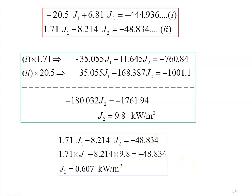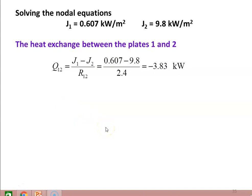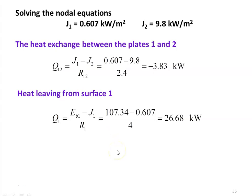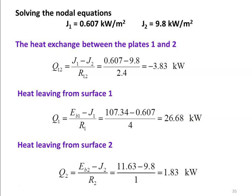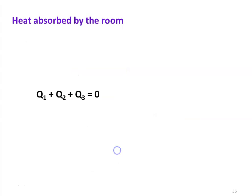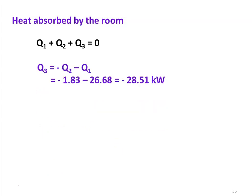Now calculating the heat transfer: Q12 equals (J1 minus J2) divided by R12 equals (0.607 minus 9.8) divided by 2.4 equals minus 3.83 kilowatts. Heat leaving surface 1: Q1 equals (Eb1 minus J1) divided by R1 equals (107.34 minus 0.607) divided by 4 equals 26.68 kilowatts. Heat leaving surface 2: Q2 equals (Eb2 minus J2) divided by R2 equals (11.63 minus 9.8) divided by 1 equals 1.83 kilowatts. Using Q1 plus Q2 plus Q3 equals 0, the heat absorbed by the room Q3 equals minus 1.83 minus 26.68 equals minus 28.51 kilowatts.